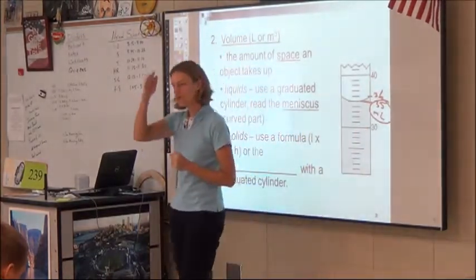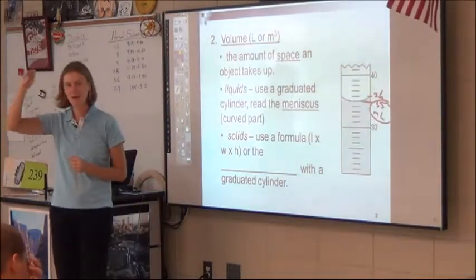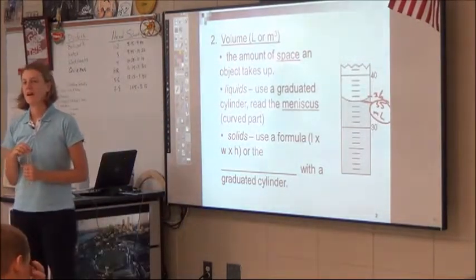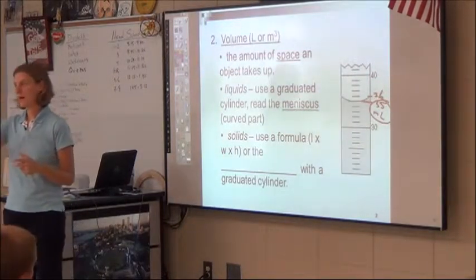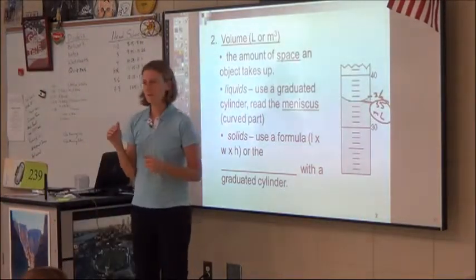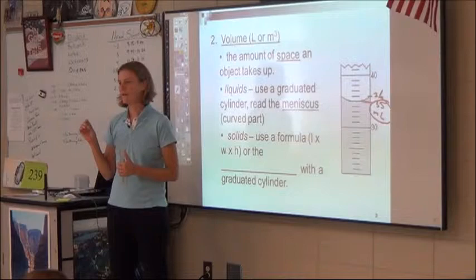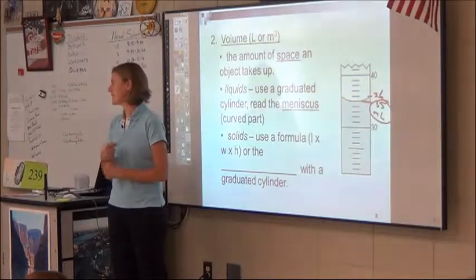And you might want to mark that down on your paper that that should be 35. The meniscus is the curve. Always read it right smack in the middle of the curve. So right in the middle, that's going to be at 35. Now not all liquids curve down, some curve up. They bubble up like mercury. Mercury would rather touch itself than the container, so mercury has a meniscus that bubbles up.